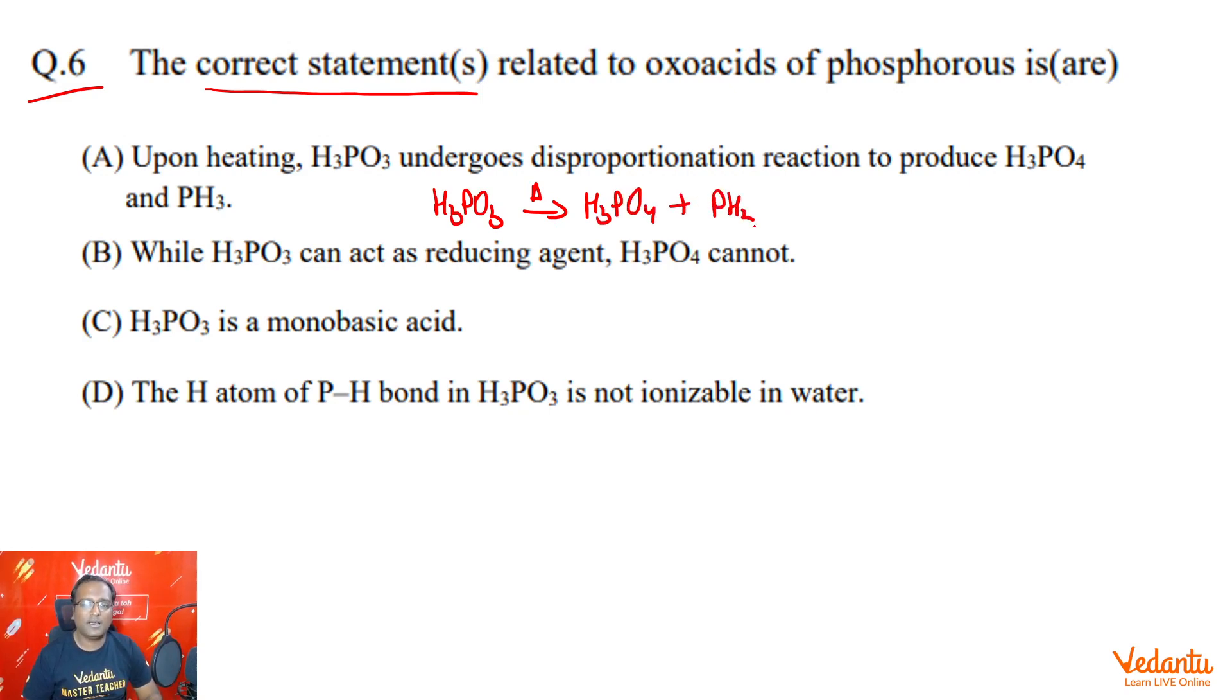H3PO3, phosphorus is in unstable plus 3 oxidation state, it goes to stable plus 5 and minus 3, so A is correct.